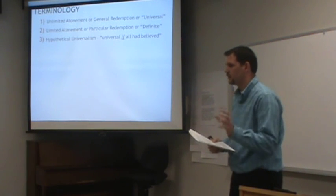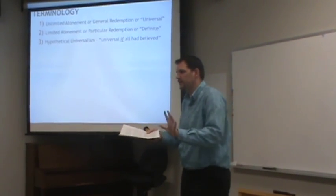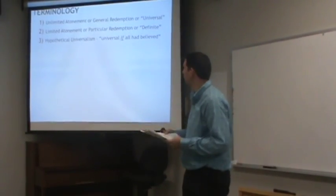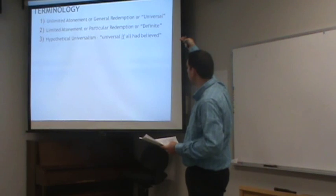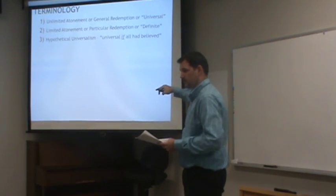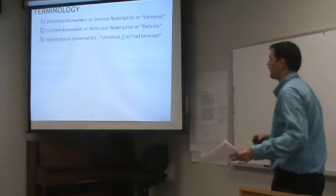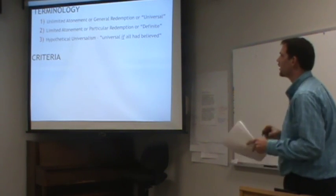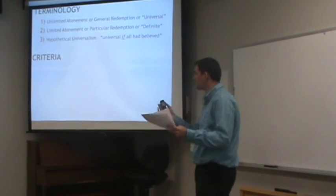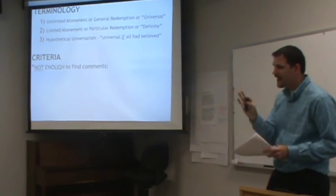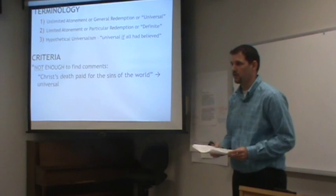Hypothetical universalism is also a somewhat problematic term, because when we hear 'universalism' we think everybody's going to be saved — but it's not that. It's a universal atonement that is hypothetical: the atonement would be universal if everyone had believed, but it's not universal — it's only hypothetically so. The criteria we have to use when investigating what specific exegetes said is that it's not enough to simply find them saying 'Christ's death paid for the sins of the whole world' and conclude they hold universal atonement.